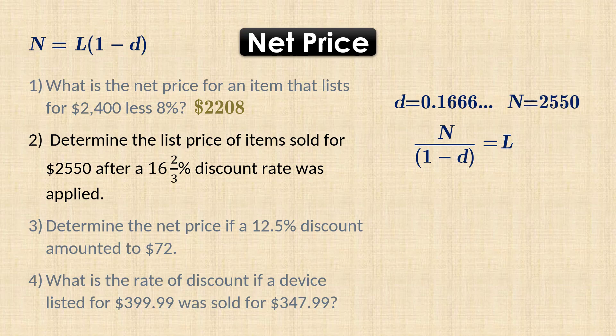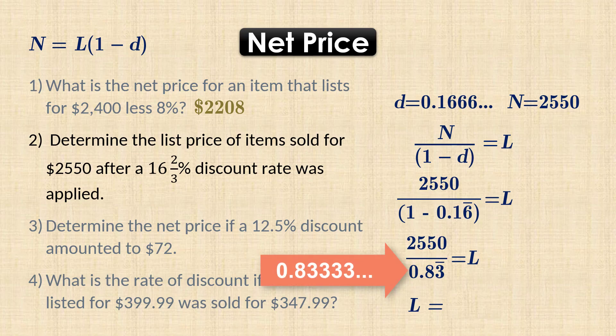The net price is 2550 since that's the amount the item sold for. The list price is thus calculated as 2550 over 0.833 repeating and that gives 3060.